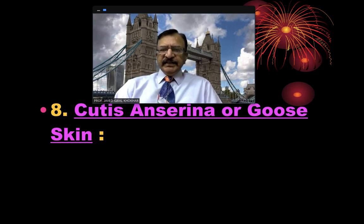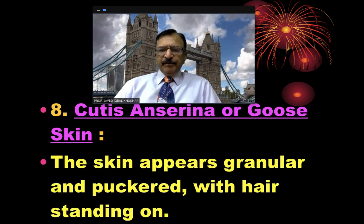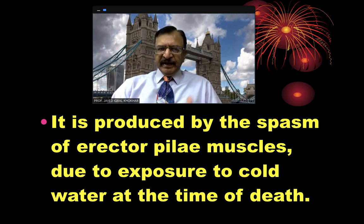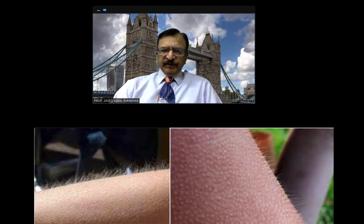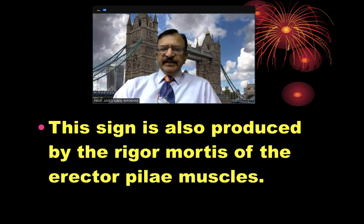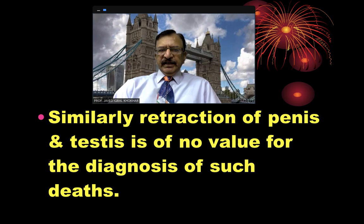Cutis anserina, or goose skin: the skin appears granular and puckered with hair standing on end. It has no value in the diagnosis of death due to drowning. It is produced by spasm of the erector pili muscle due to exposure to cold water at the time of death, and this sign is also produced by rigor mortis of the erector pili muscle. Similarly, retraction of the penis and testes is of no value for the diagnosis of such deaths.